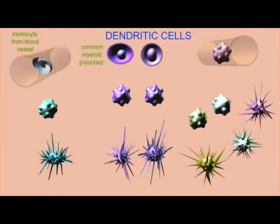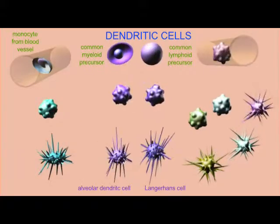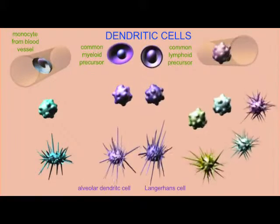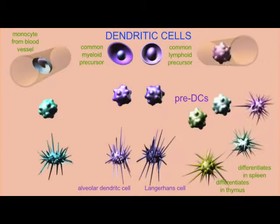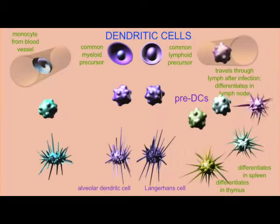Not only are the T-helper cells required to give permission to other components of the immune system, T-helper cells must receive permission by antigen-presenting cells before they can be activated.